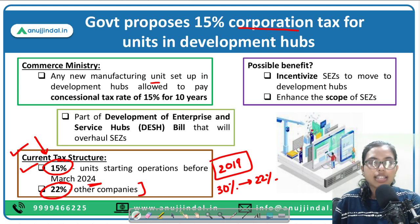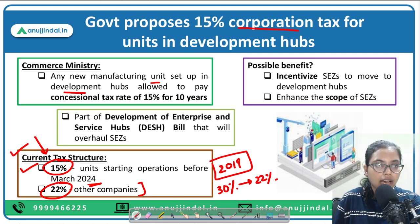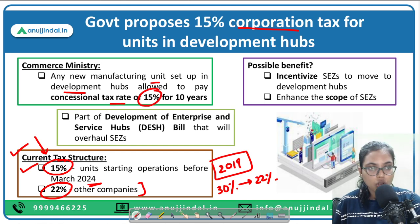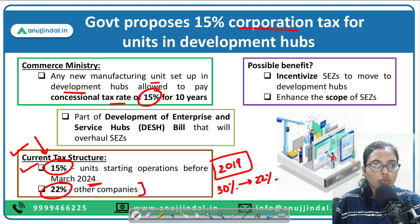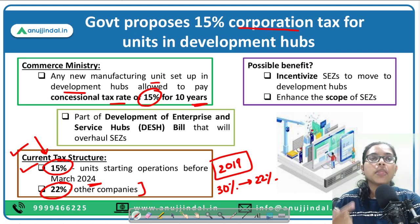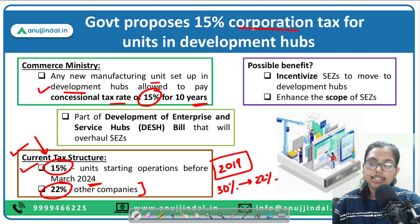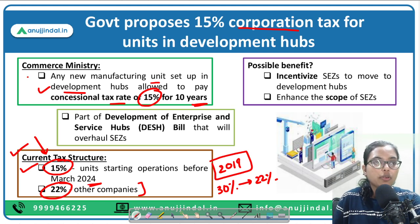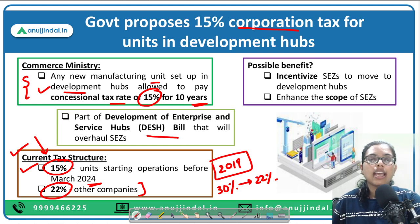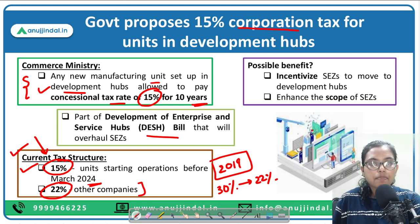The new proposal from the commerce ministry is that any new manufacturing unit set up in the development hubs will be allowed to pay a concessional tax rate of 15 percent for 10 years. This is introduced as part of the DESH Bill. The DESH Bill stands for Development of Enterprises and Services Hub Bill 2022.